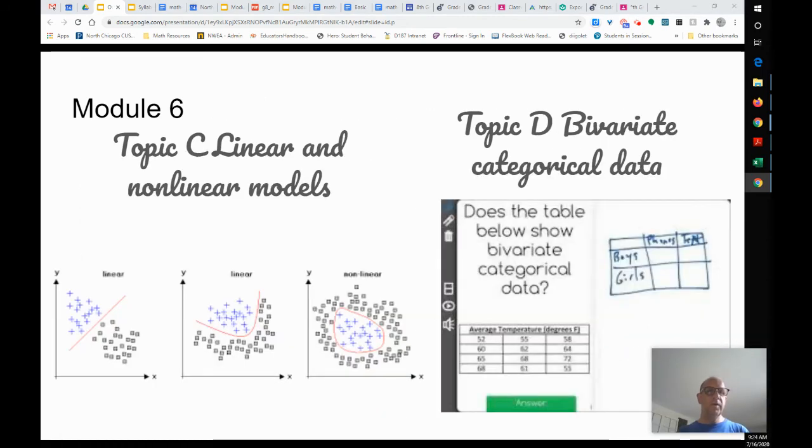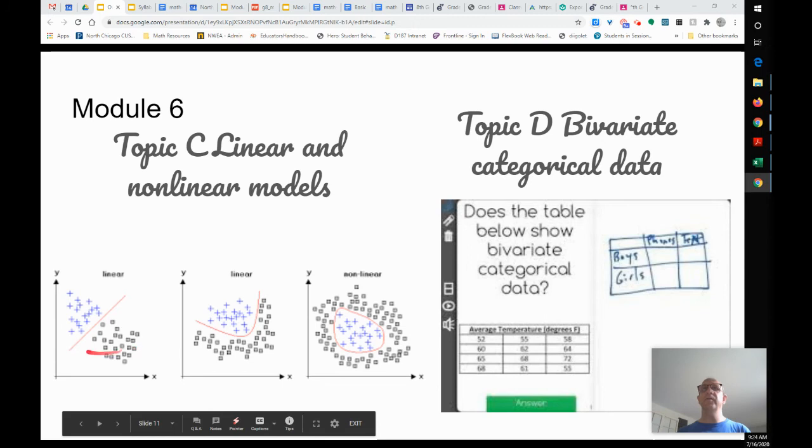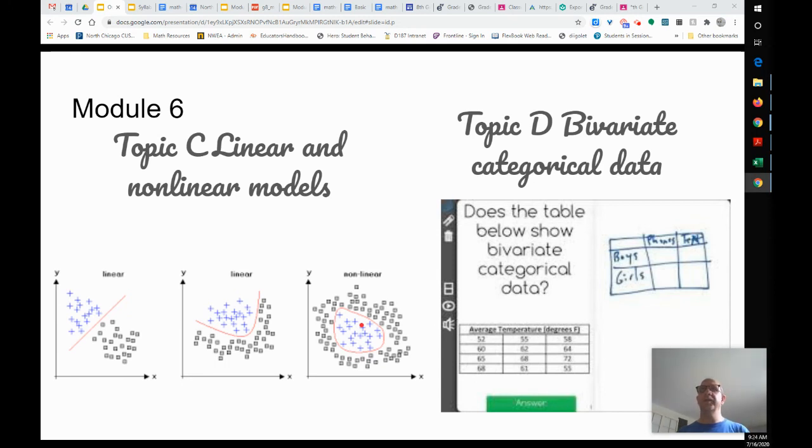Next, we're going to move to module six, lessons C and D. So not that data sometimes is a straight line, but sometimes there's a curved line. So we're going to look at that. When is it straight? When is it not straight or linear and non-linear? And then we're going to decide how to show bivariate data. That's bi meaning two categories.